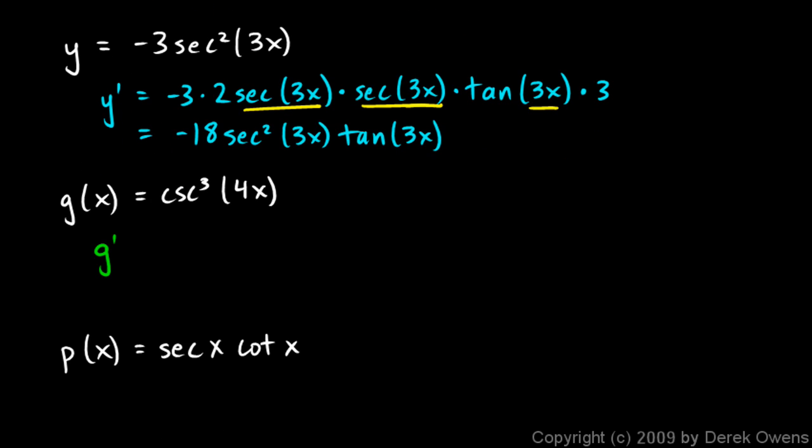So g primed of x is going to be 3 times cosecant squared of 4x times the derivative of cosecant 4x. That's going to be negative cosecant 4x cotangent 4x. And then let's clean that up some. Oh, and we need to multiply by the derivative of the inner function here, the 4x, so we end up saying times 4 after all of that.